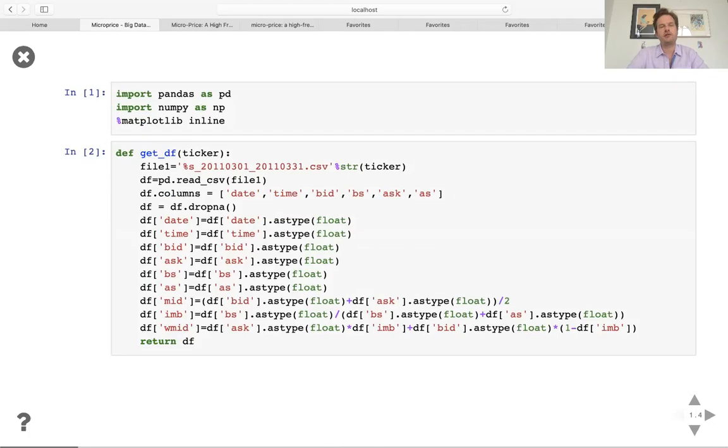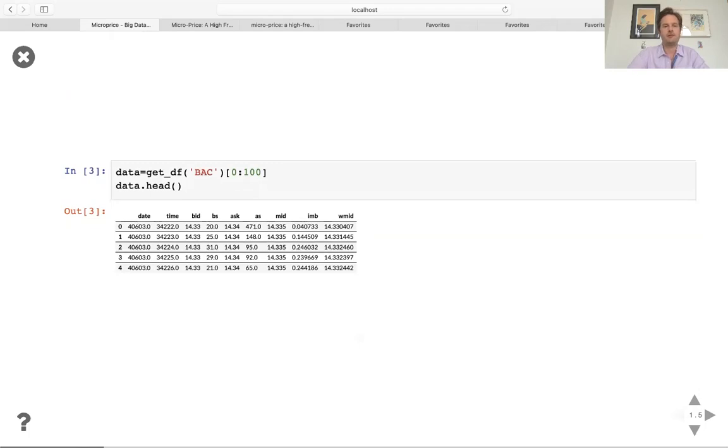So just so you can see how this IPython order book works, I will include a sample data file. And as you can see, this is very standard structure, which I hope that you'll be able to adapt to other datasets. And ultimately this loads the order book updates at the top of the book for bank of America. And as we can see here, the bid and the ask stay at 1433 and 1434, but you can see that the bid sizes and ask sizes change from one quote to the next.